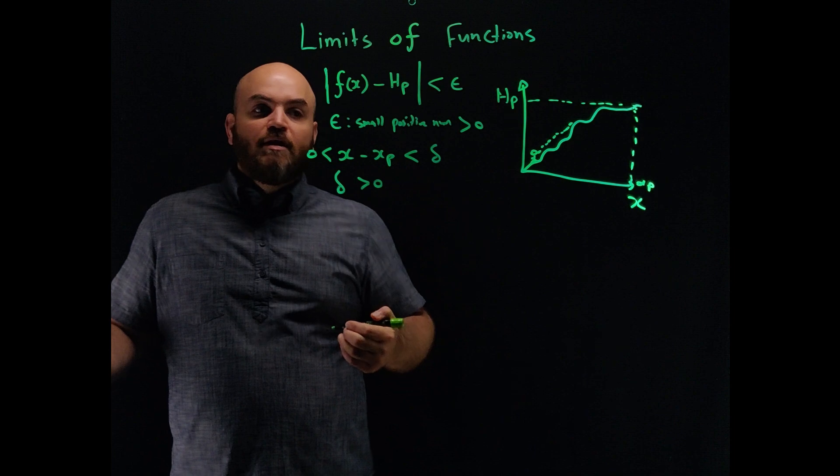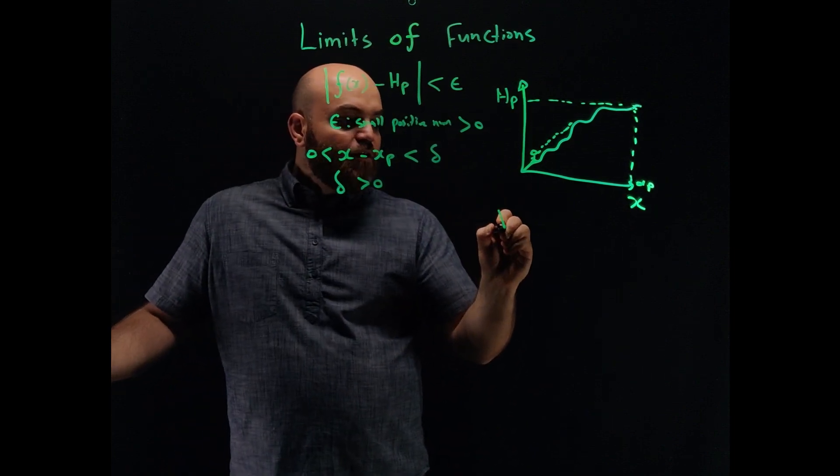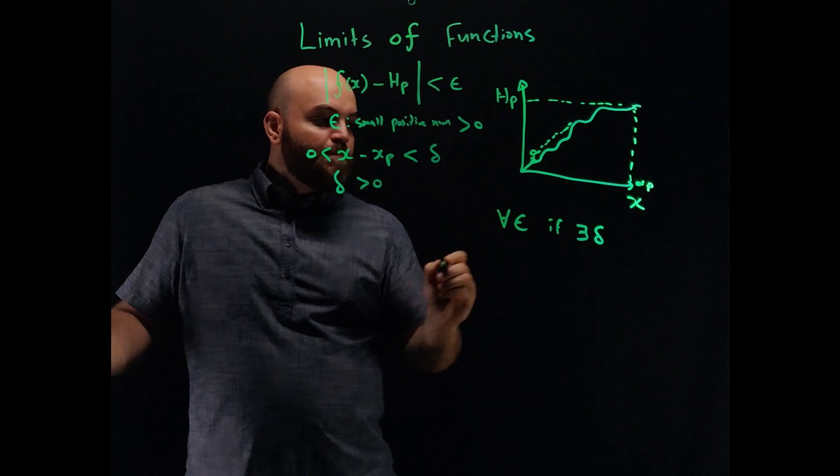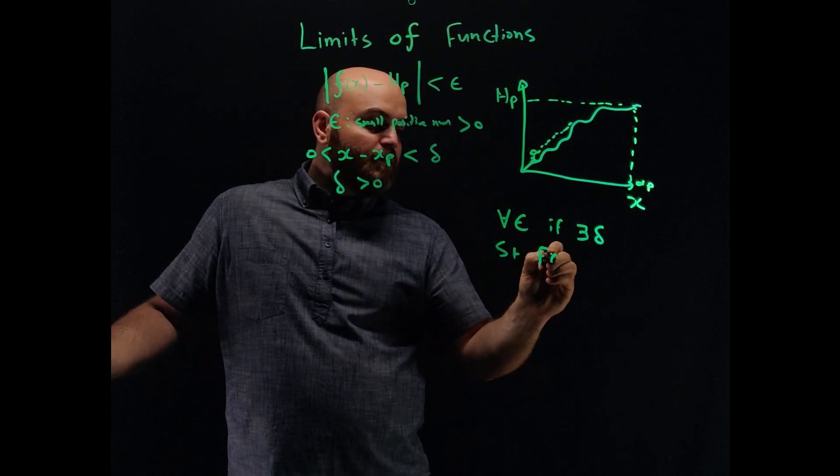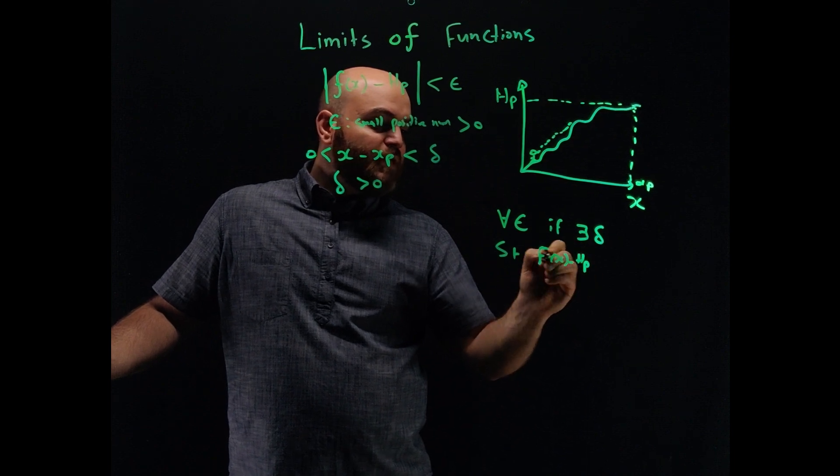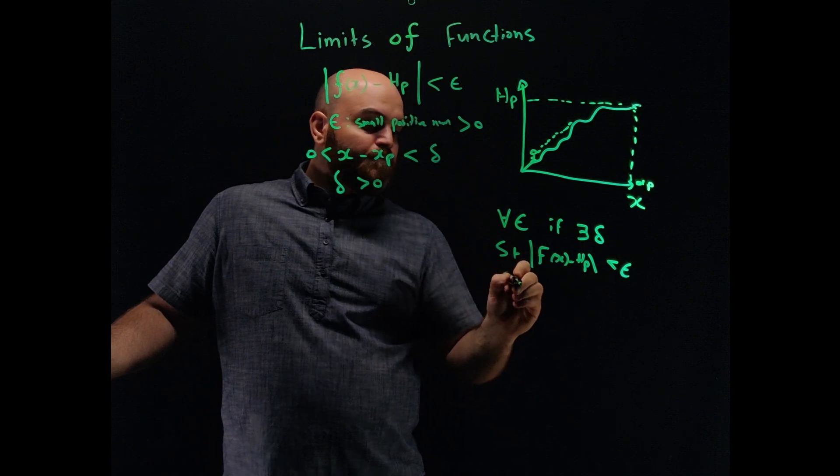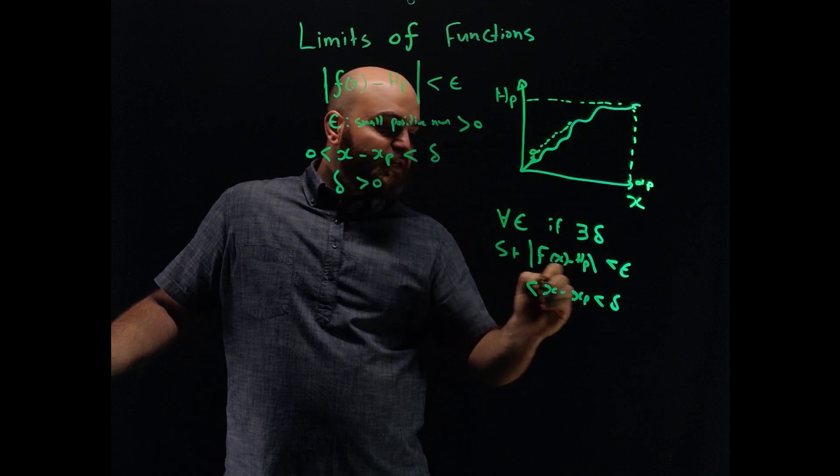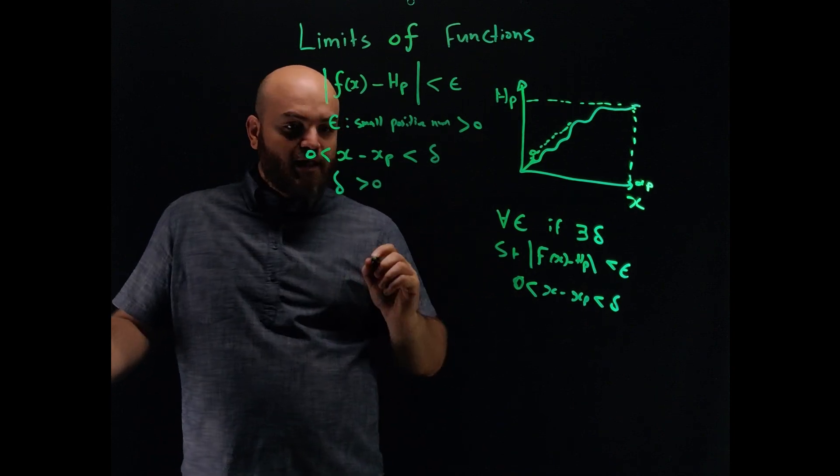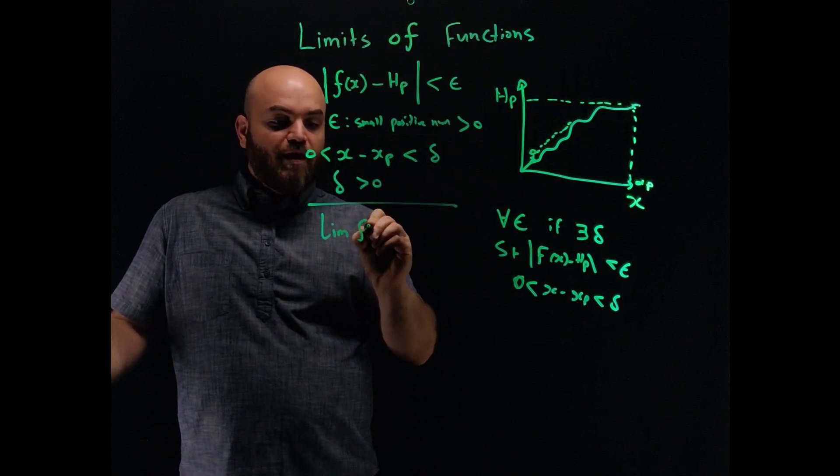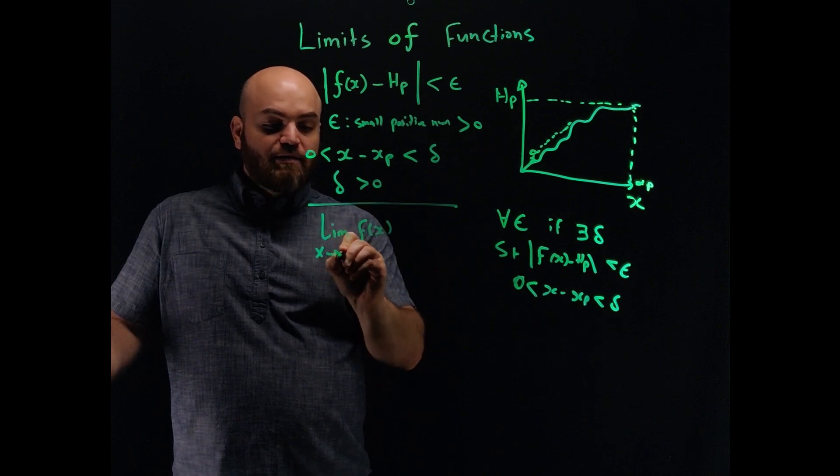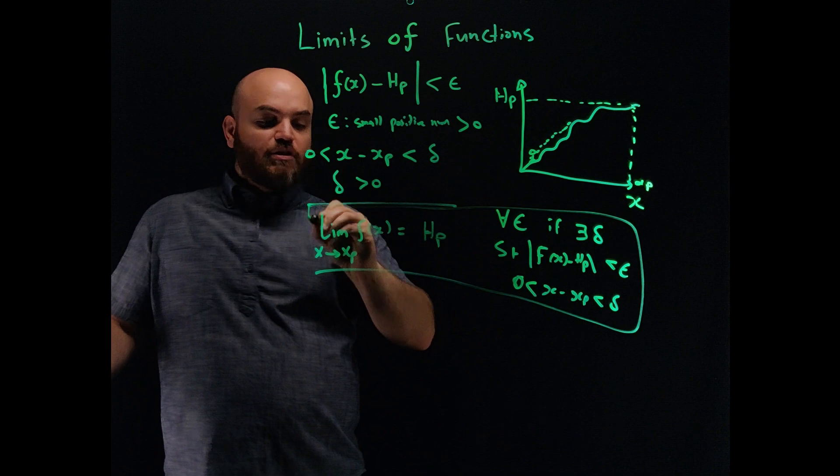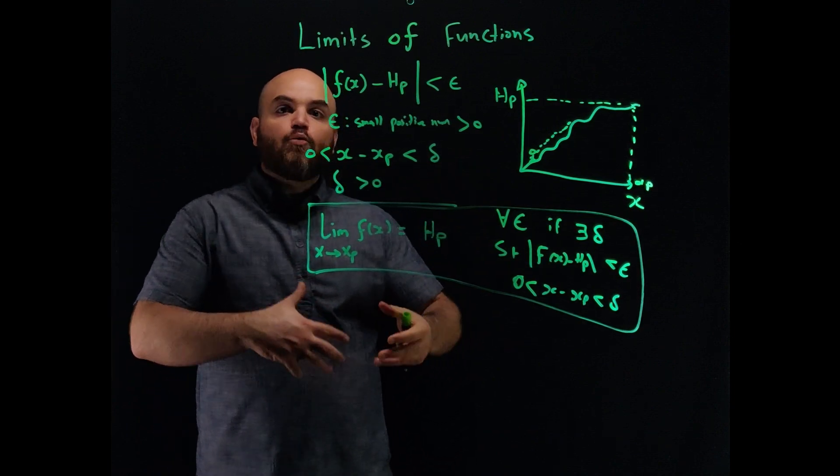If I say x minus x peak should be greater than zero and less than delta, where delta here is also greater than zero, a small positive number, then I've effectively defined the limit. This is the limit of the function. So I can say more mathematically that for all values of epsilon, if there exists a delta such that f(x) minus h peak absolute is less than epsilon and x minus x peak is less than delta and greater than zero, then and only then, the limit of f(x) as x goes to x peak is equal to h peak. This is the formal definition of the limit of a function, and we defined it in an intuitive way.